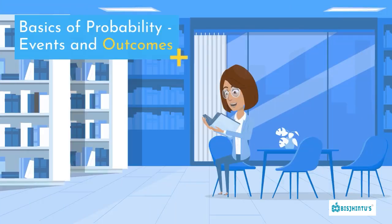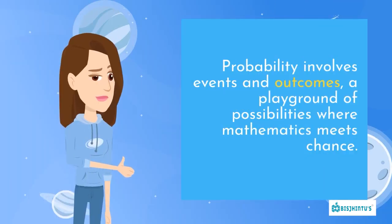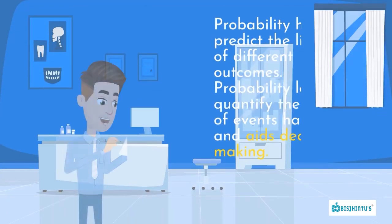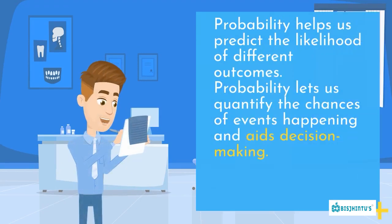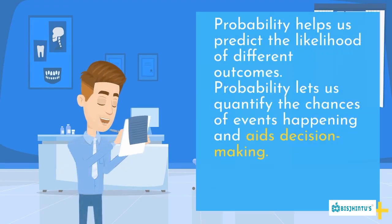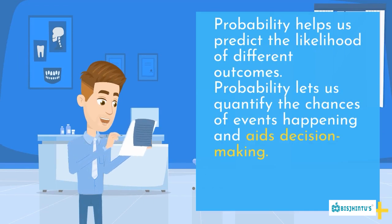Basics of Probability: Events and Outcomes. Probability involves events and outcomes, a playground of possibilities where mathematics meets chance. Probability helps us predict the likelihood of different outcomes and lets us quantify the chances of events happening, aiding decision-making.